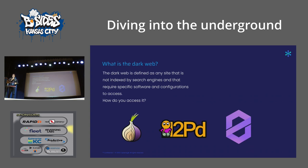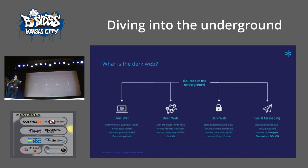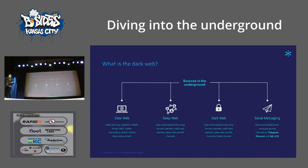This is probably the last time I'll say 'dark web' throughout this presentation. Basically, anything not indexed by Google that you need a special browser to access — things like Tor, i2P, and ZeroNet. But I like to refer to it as 'the underground,' because many sources aren't exclusive to the dark web. You can find intel on Reddit, Twitter, pastebins, and messaging platforms like Telegram, which is a huge platform for threat actors for fraud, terrorism, narcotics, and more.